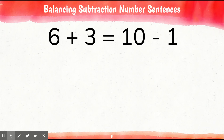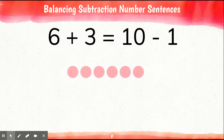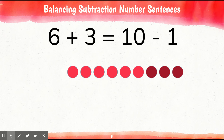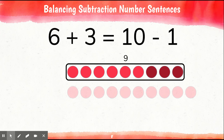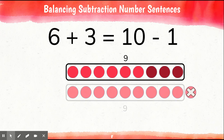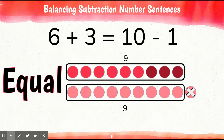Okay, here's another one. We have 6 plus 3 is equal to 10 minus 1. Do you think this is going to be equal or unequal? Let's see if you're correct. We have 6 counters — we're going to add 3 more. That makes a total of 9. Then we have 10 counters and we're going to take away 1. That leaves us with 9 as well. This is an equal equation.